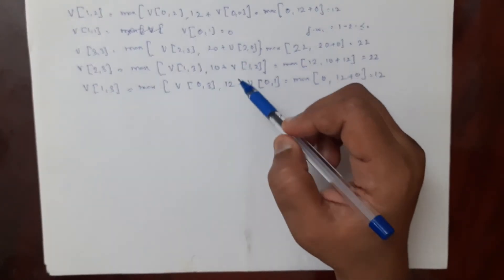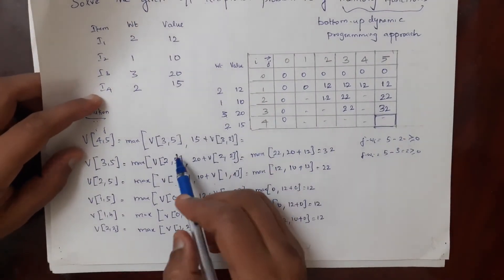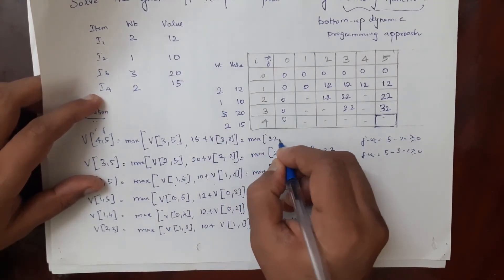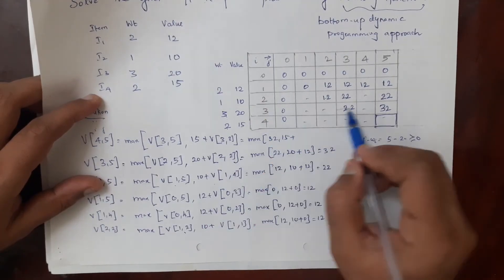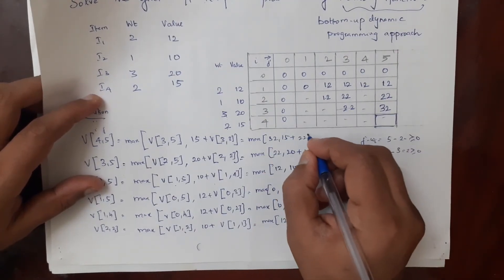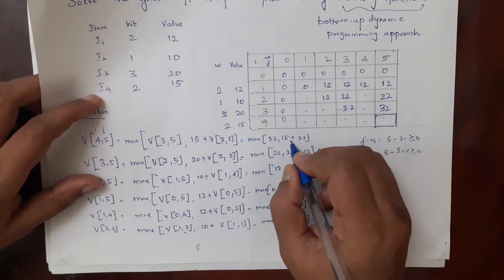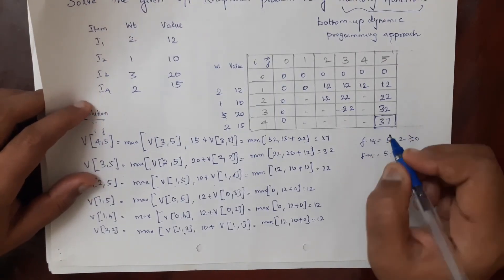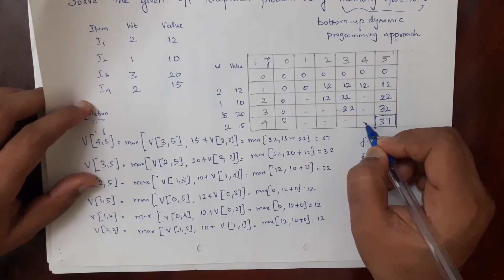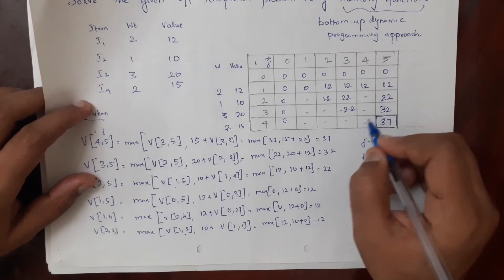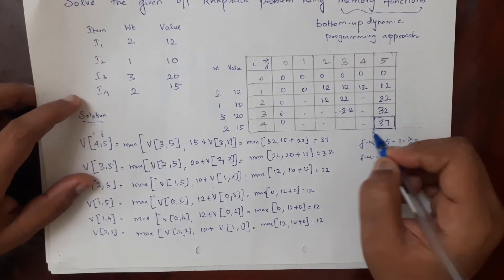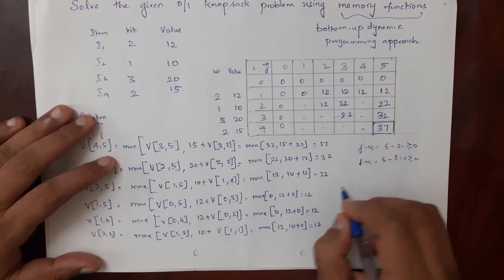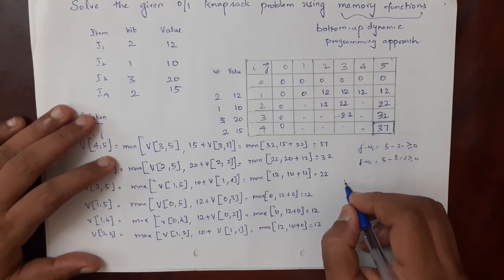Now we have v(3,5) = 32 and v(3,3) = 22. So v(4,5) = maximum of v(3,5) = 32, or 15 plus v(3,3) = 22, giving maximum of 32 or 37. Therefore v(4,5) = 37. The null values that were not required were never calculated — this is the advantage of the bottom-up memory functions approach over the top-down method.